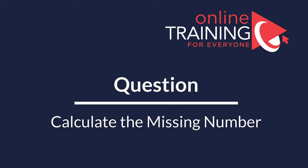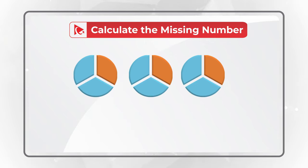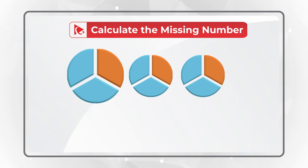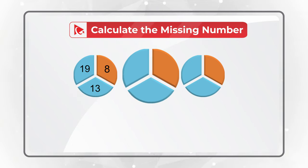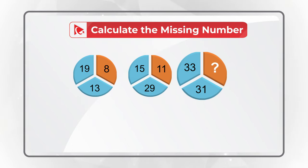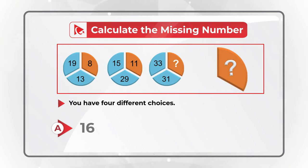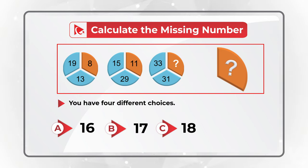Here's a puzzling question with a very surprising solution. You're presented with three circles, each broken into three equal parts. The first circle has numbers 8, 19, and 13. The second circle has numbers 11, 15, and 29. The third circle has numbers 33, 31, and a missing number. You need to calculate the missing number from four choices: A: 16, B: 17, C: 18, D: 20.